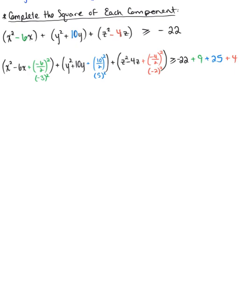Alright, so let's simplify. We have x squared minus 6x plus 9 plus y squared plus 10y plus 25 plus z squared minus 4z plus 4. And that's greater than or equal to minus 22 plus 9 plus 25 plus 4, which leaves us with 16.